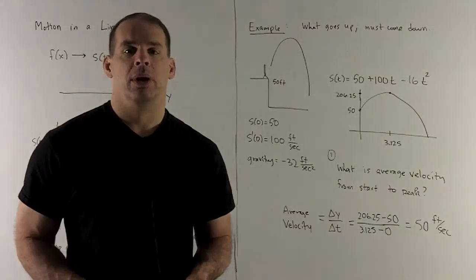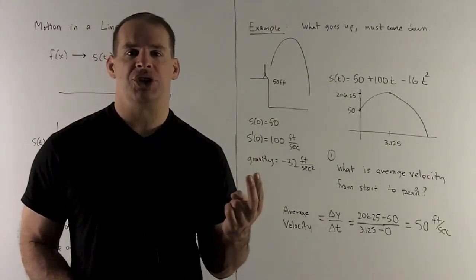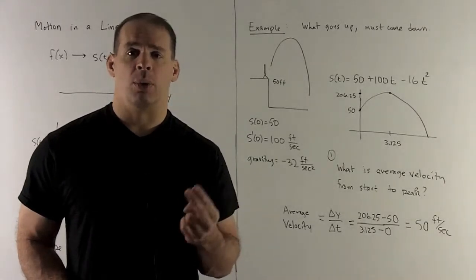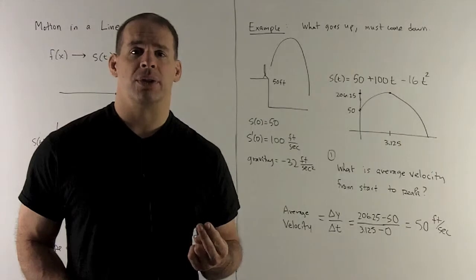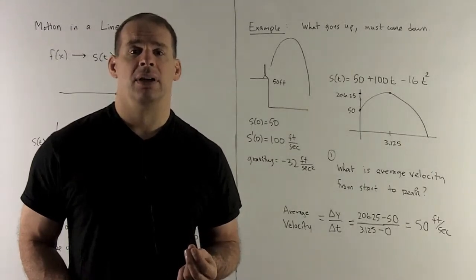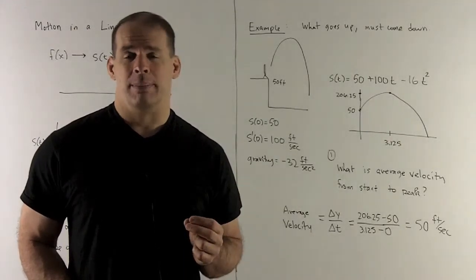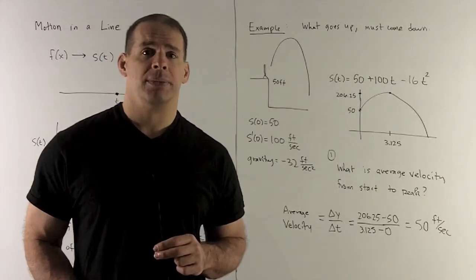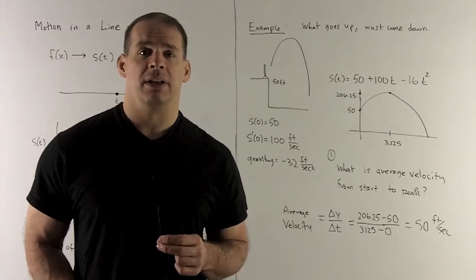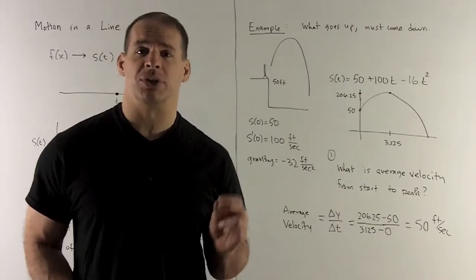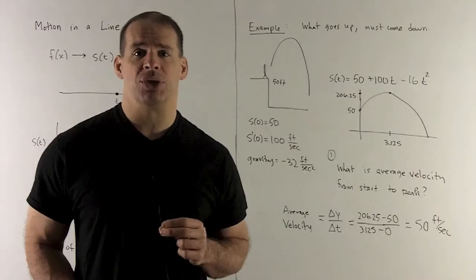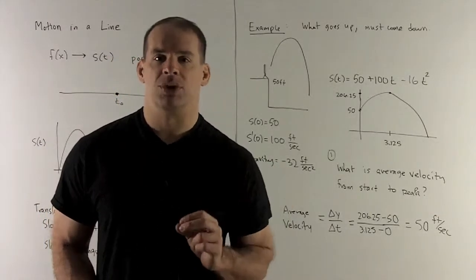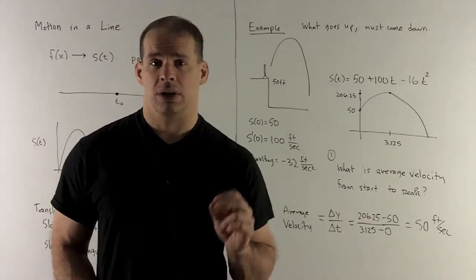Now, what do we do? Well, we're going to take our change in position over change in time. Our change in time is going to be from zero to 3.125. So the difference of those is 3.125. For the change in position, I'm going to have to evaluate my times through the position function. So that's going to give me, put a zero in, you get a 50. If you put 3.125 in, you have to go to your calculator. That's going to give you 206.25.